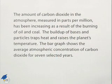Our next example deals with finding the slope, an equation, and a value using that equation. The amount of carbon dioxide in the atmosphere, measured in parts per million, has been increasing as a result of the burning of oil and coal. The buildup of bases and particles traps heat and raises the planet's temperature. The bar graph shows the average atmospheric concentration of carbon dioxide for seven selected years.